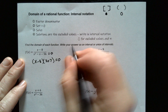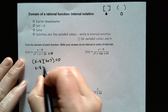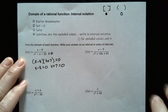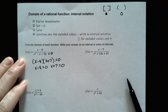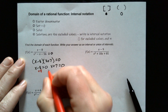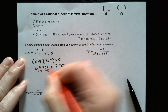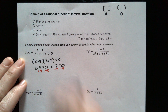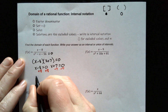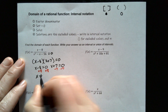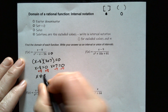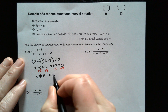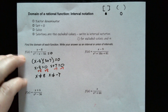So set that equal to zero: x minus 8 equals zero, and x plus 7 equals zero. If we add 8 here and subtract 7 here, that gives us x is not equal to 8 — because that's an excluded value — and x is not equal to negative 7.